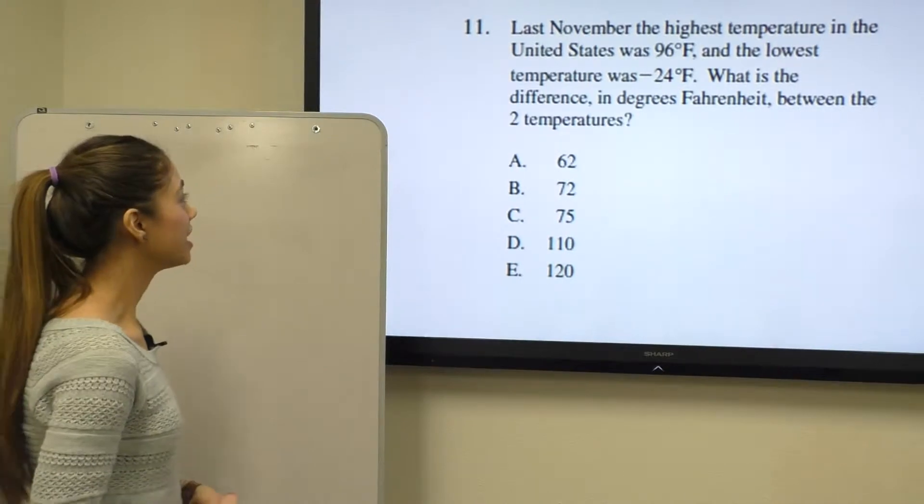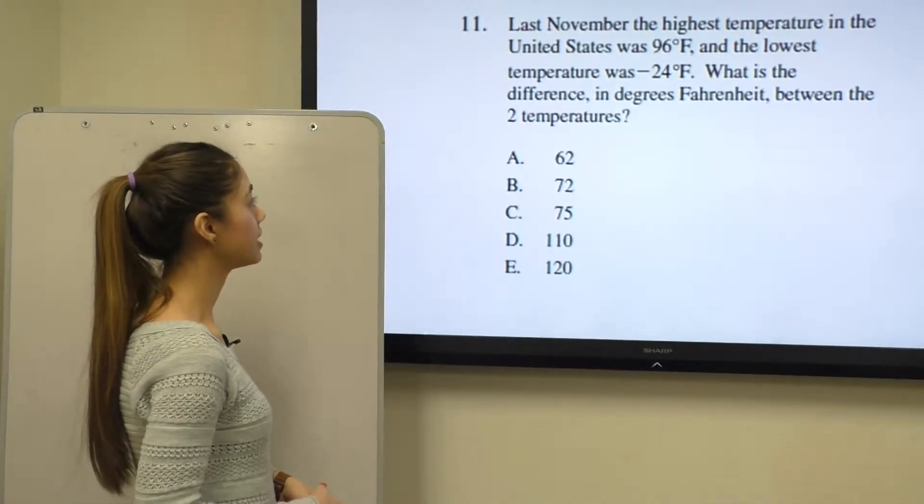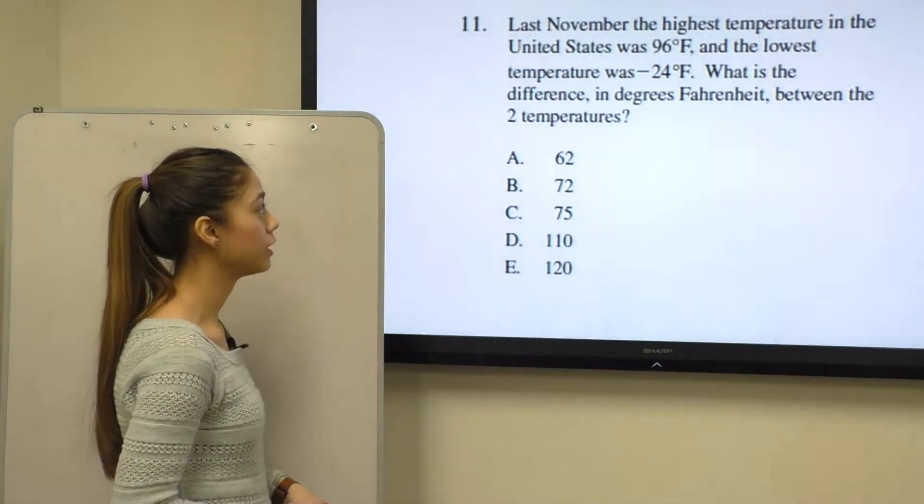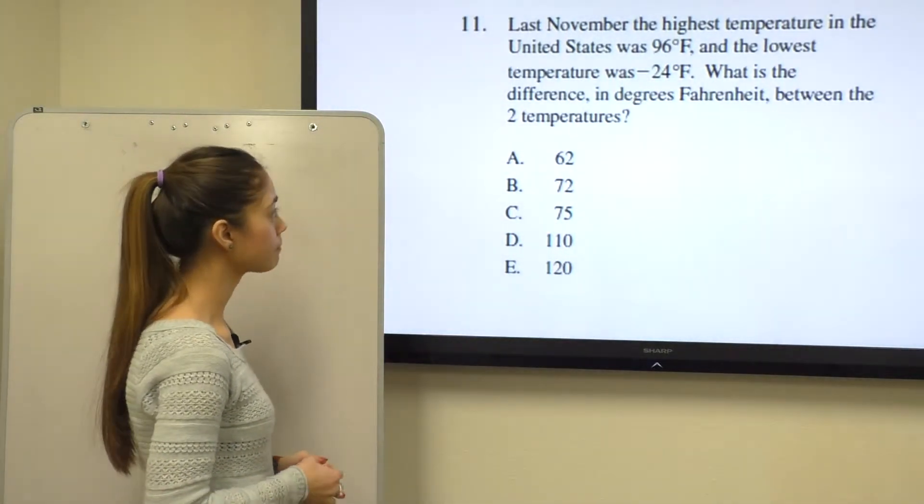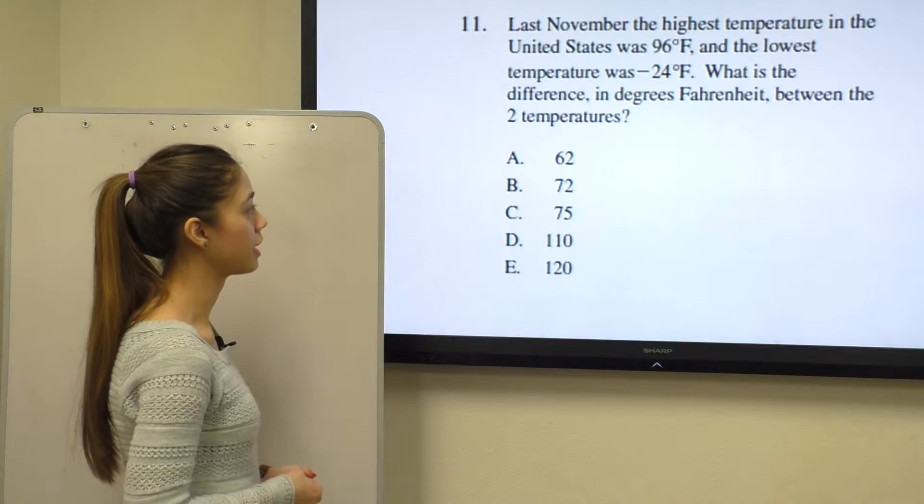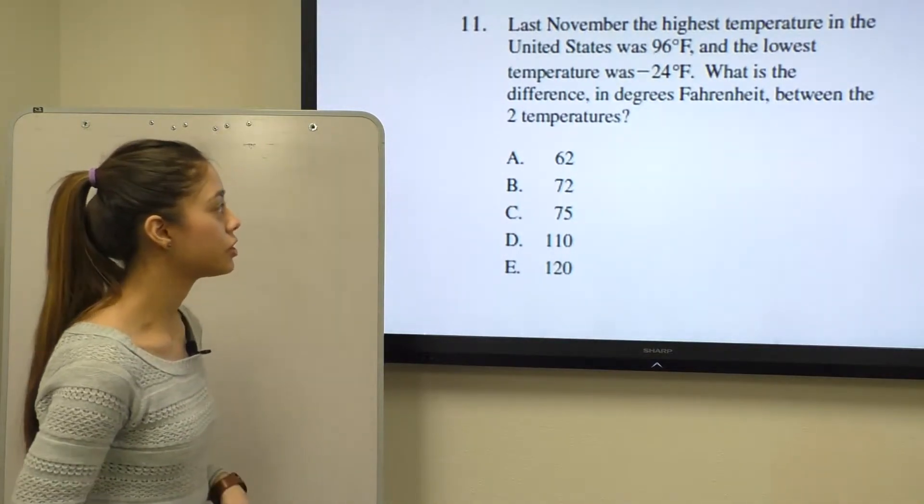Question number 11 says last November the highest temperature in the United States was 96 degrees Fahrenheit and the lowest temperature was negative 24 degrees Fahrenheit. What is the difference in degrees Fahrenheit between the two temperatures? Since they're asking for a difference, you automatically think of subtraction.